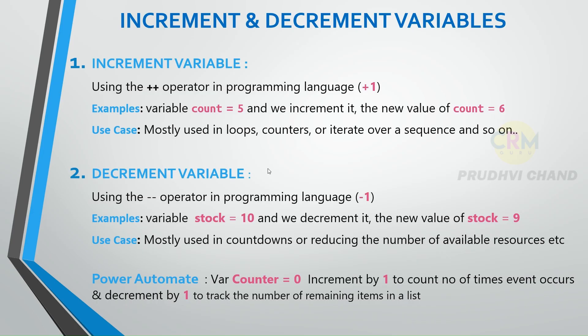Incrementing or decrementing variables are common operations in programming and automation. They involve increasing or decreasing a value by a specific amount.